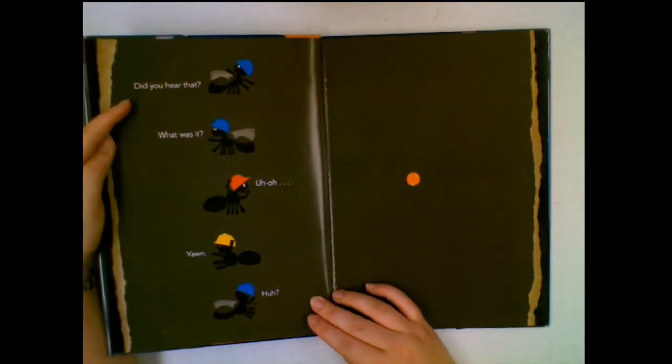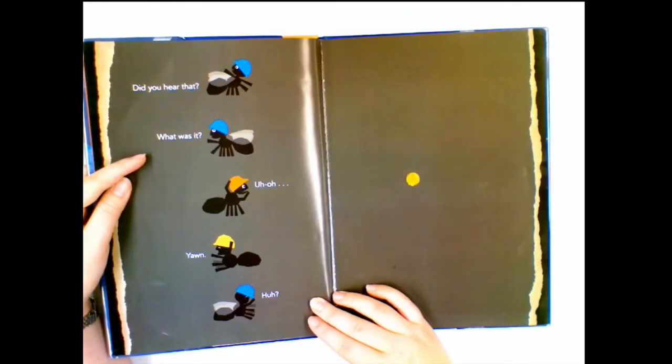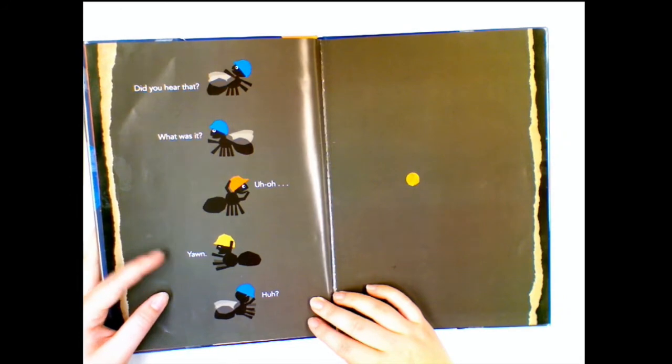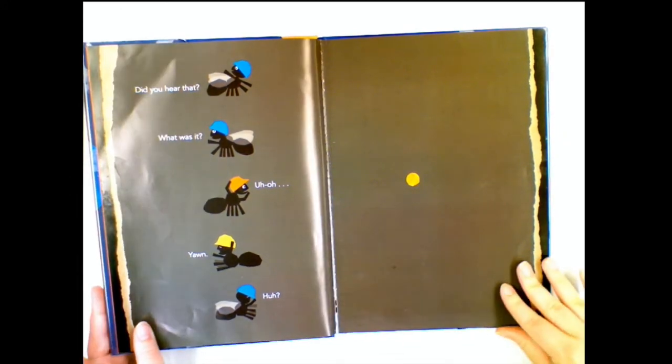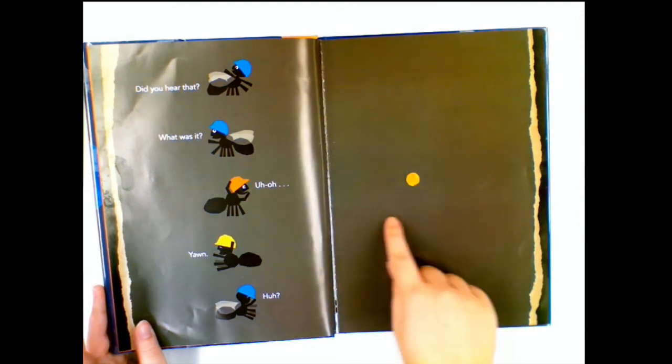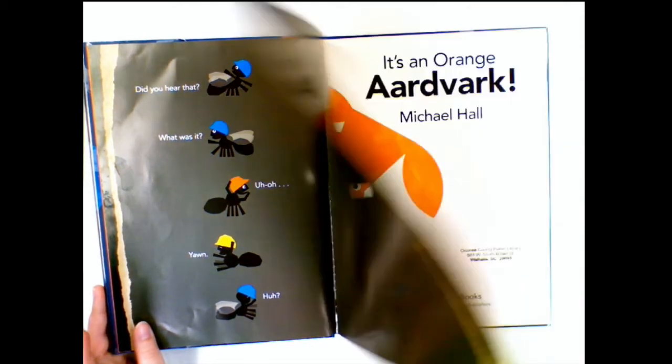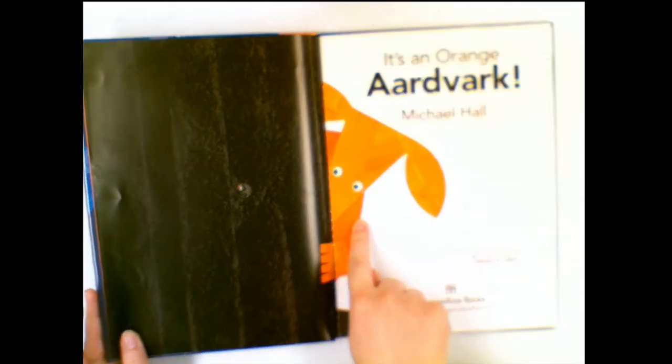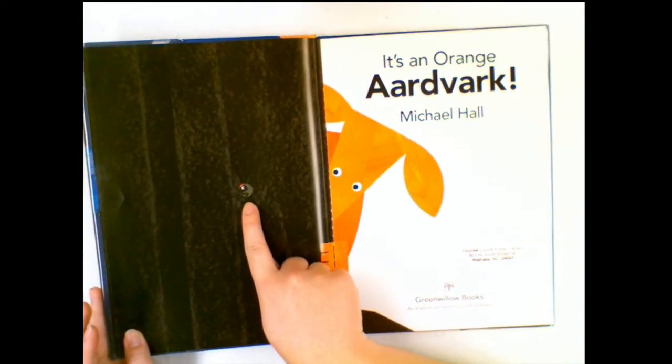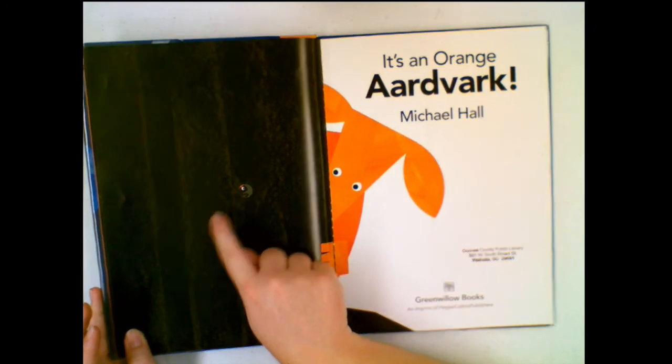Did you hear that? What was it? Uh-oh. There's a little hole on the page over here that when we flip it, it's an Orange Aardvark. And we have our little carpenter ant friend looking out right here.